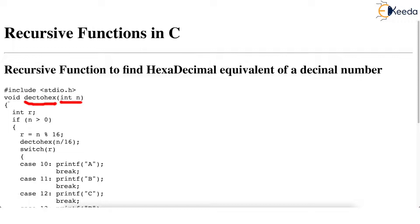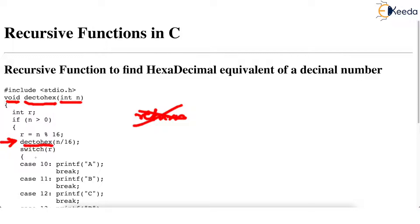The function is again void, just as in the previous video. So this function won't have a return statement. This is clearly a recursive function because dec_to_hex calls dec_to_hex again.